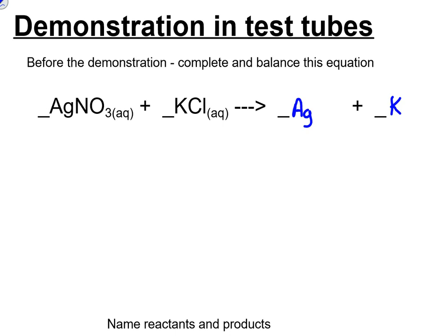Now we're going to switch the partners. Who's silver going to get over here? Cl. Silver and chloride, when they come together, do not dissolve in water. We're married for life. Who's the potassium going to get? NO₃, the nitrate ion.